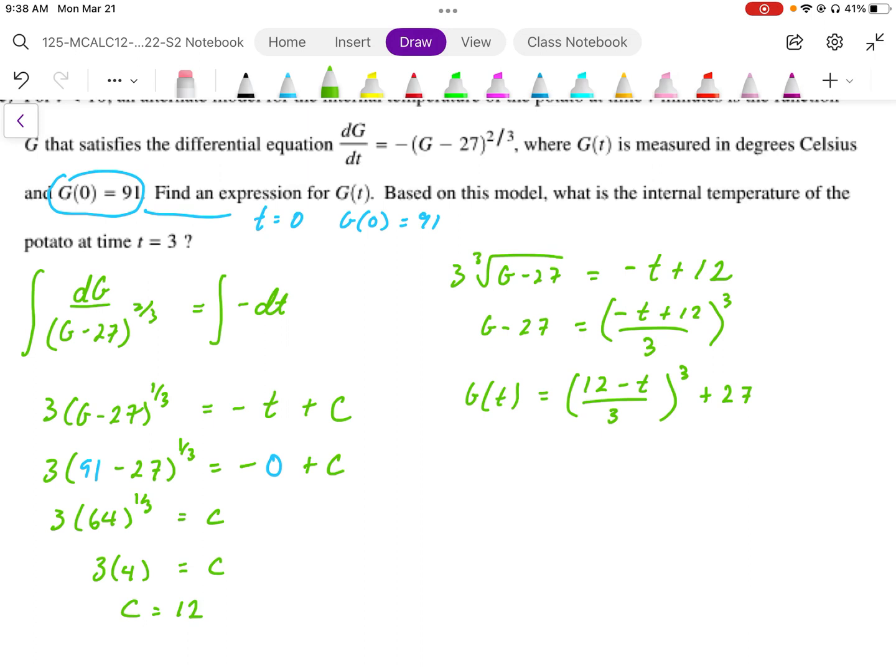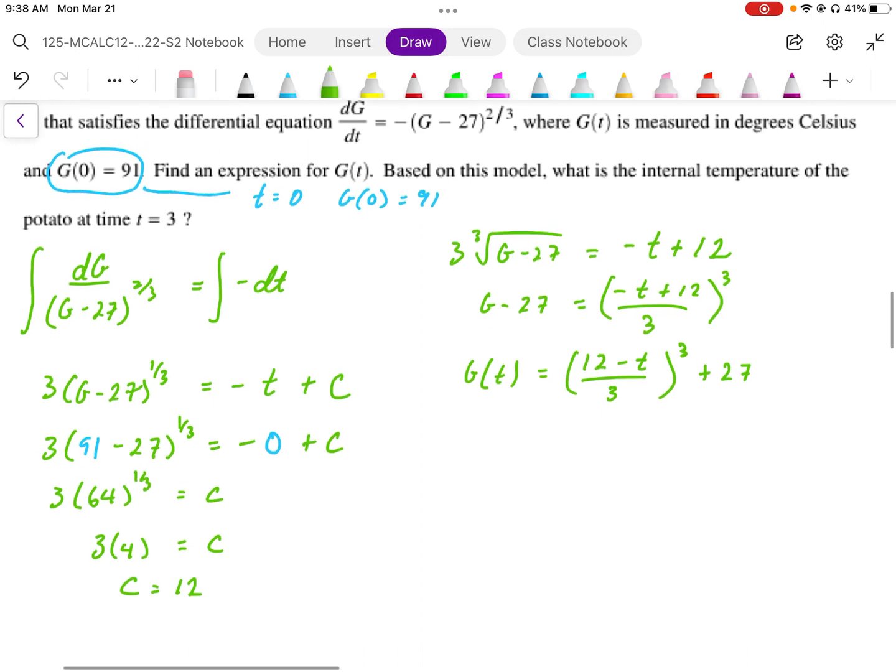We now have our G function, and then we're going to solve for G at t equals 3. We want to know the temperature at time equals 3. So we're going to plug 3 into that equation. We're going to end up with (12 minus 3) all over 3, cubed, plus 27.